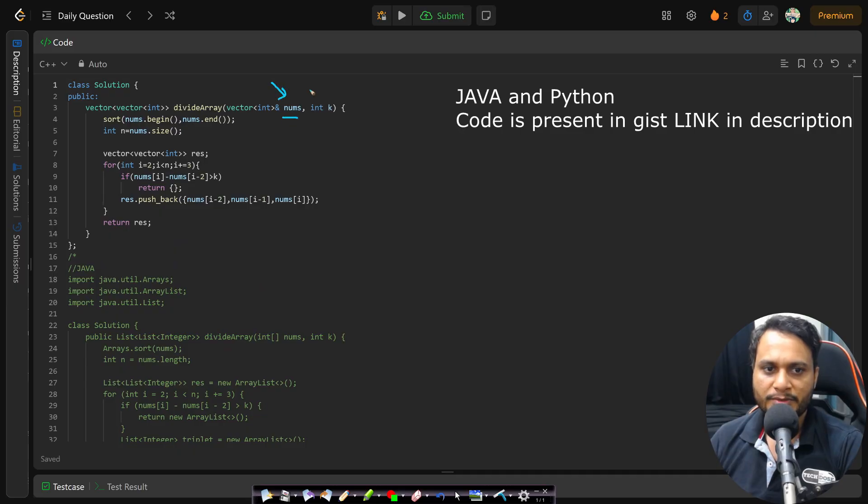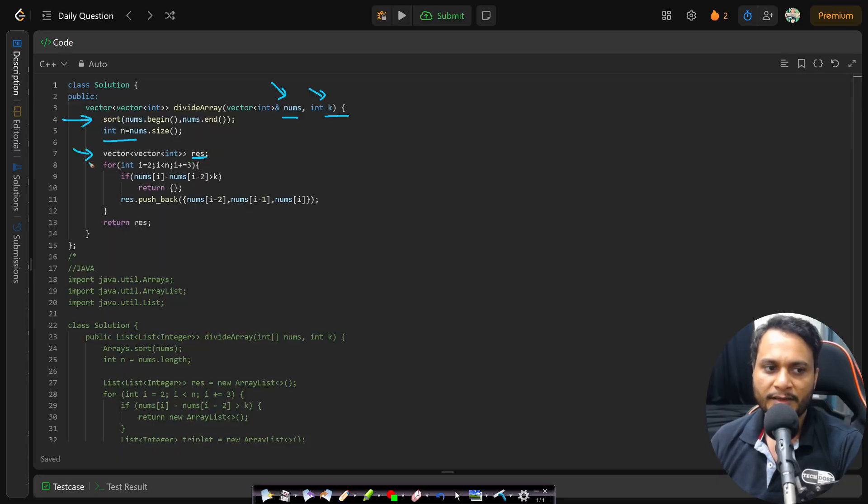In this problem, we are given the nums array and the value k. The first step is to sort and find the size and then we will be taking the resultant 2D array and we will be iterating from index 2 and make a jump size of 3 every time. So you see we have made a jump size of 3 and in every group, we will be checking nums i minus nums i minus 2 which is the max minus minimum and if it is greater than k, then we will be returning an empty list and if it is not, then we will be pushing the entire triplet into the list of list which is the result. Finally, we will be returning the result.